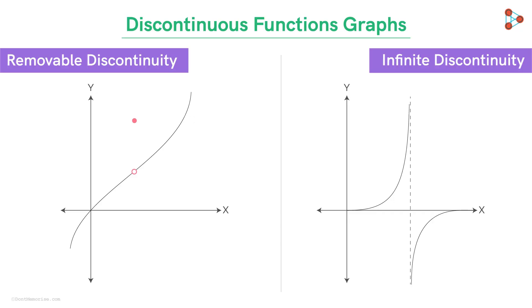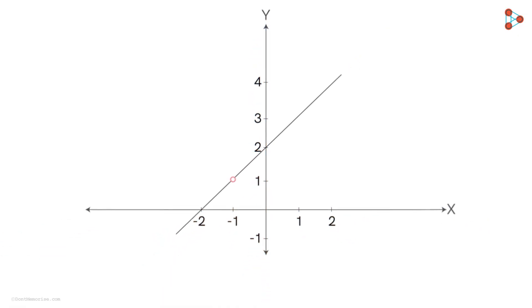Before ending this video, I will leave you with a question to ponder upon. Look at this graph. It kind of looks similar to the graph of the type removable discontinuity we just saw now. So the question is, is this function continuous at x equal to negative 1? Share your answers with your reasons in the comment section below.